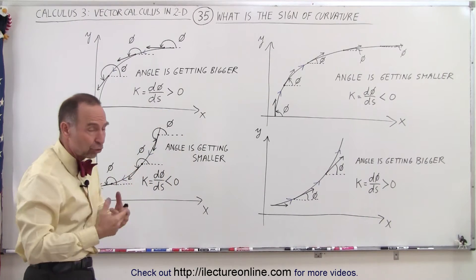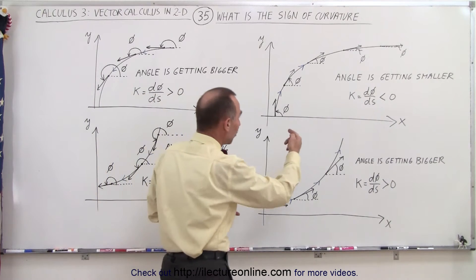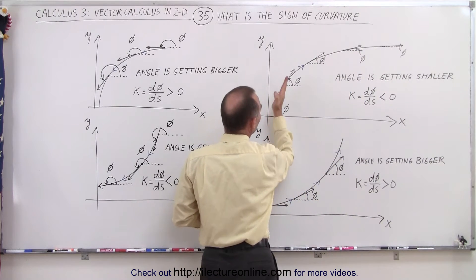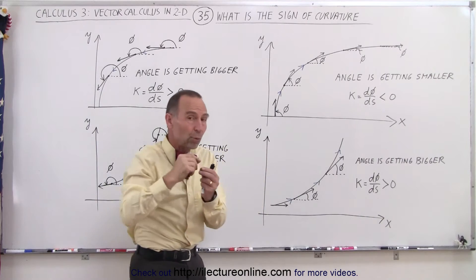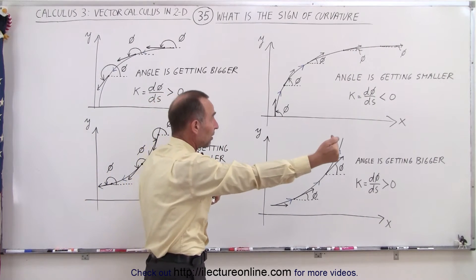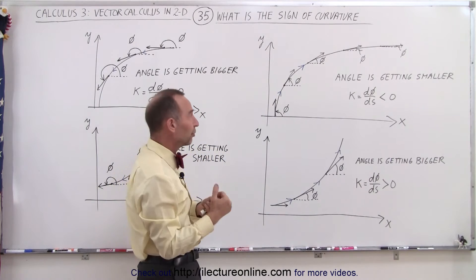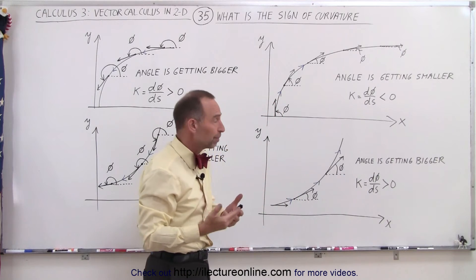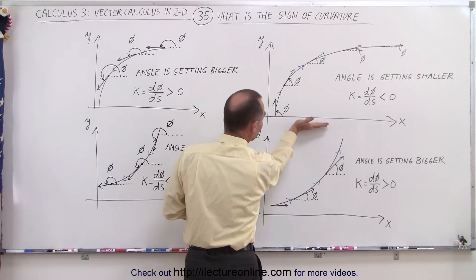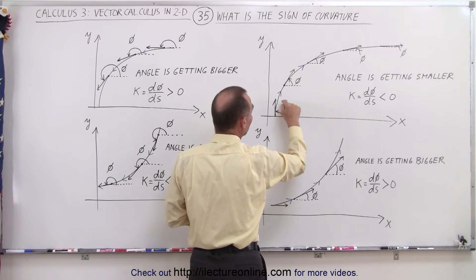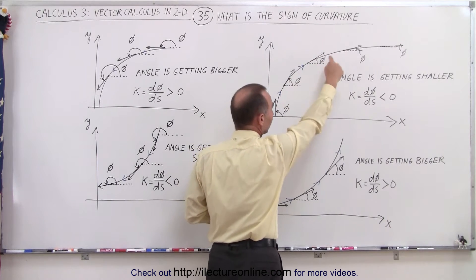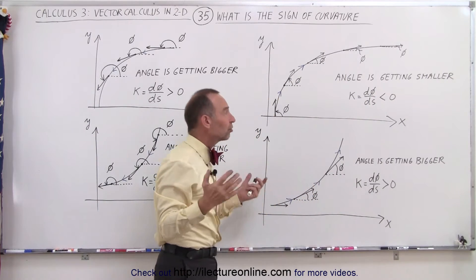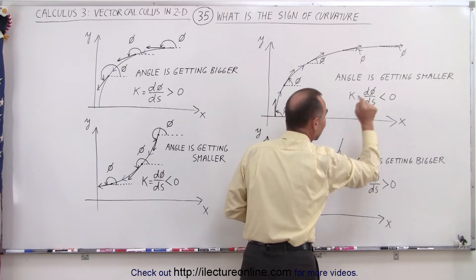Here we have four examples that should illustrate how to determine that. Our first example is the one from the previous video. Here we're traveling along the curve, and notice that we have the tangent unit vectors drawn. It's important to know which direction you're traveling, because unit tangent vectors will have a very different direction going the other way. The angle between the positive x-axis and the unit tangent vector is shown here, and notice as you travel along the little blue arrows indicating the direction of travel, the angles become smaller. As the angles are getting smaller, the curvature is going to be a negative quantity.